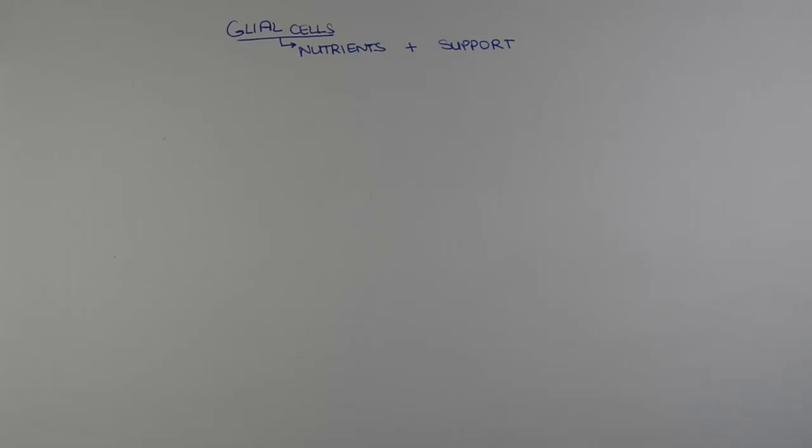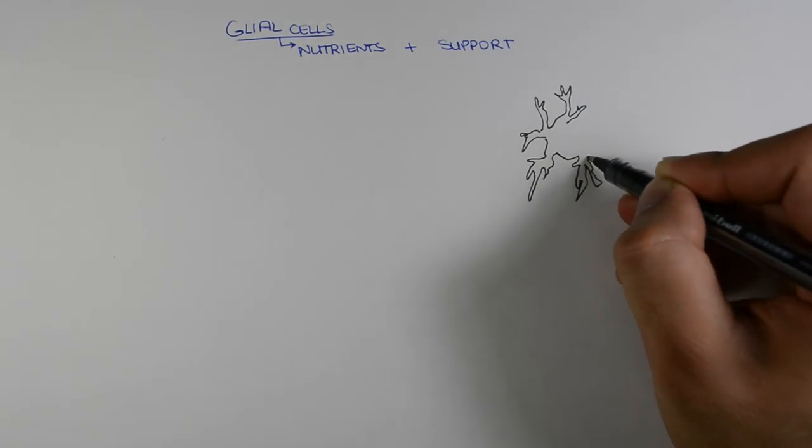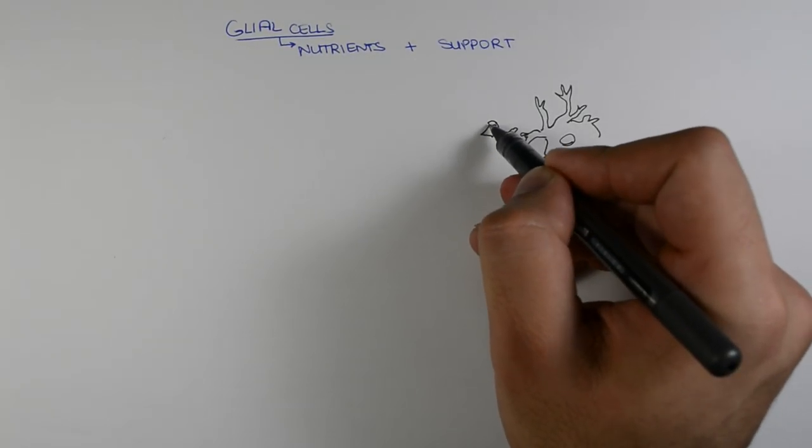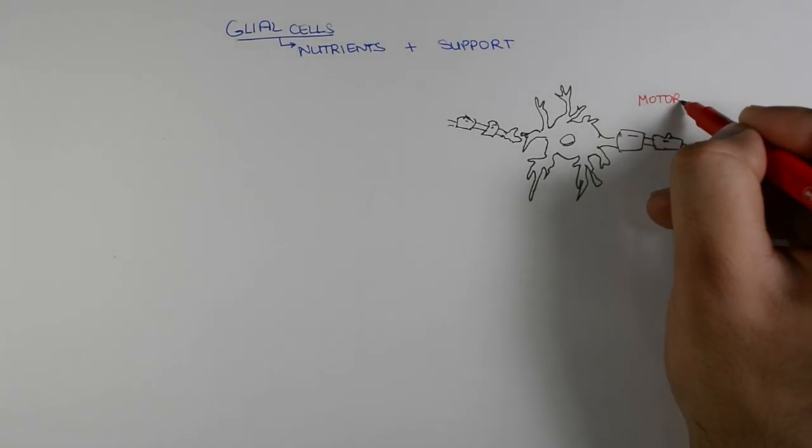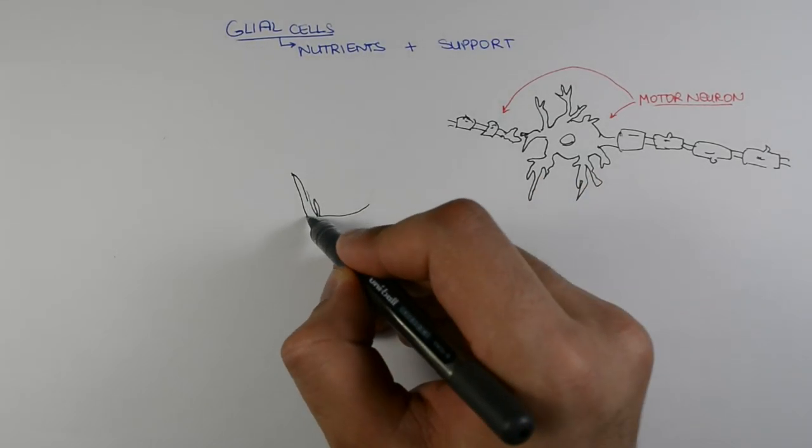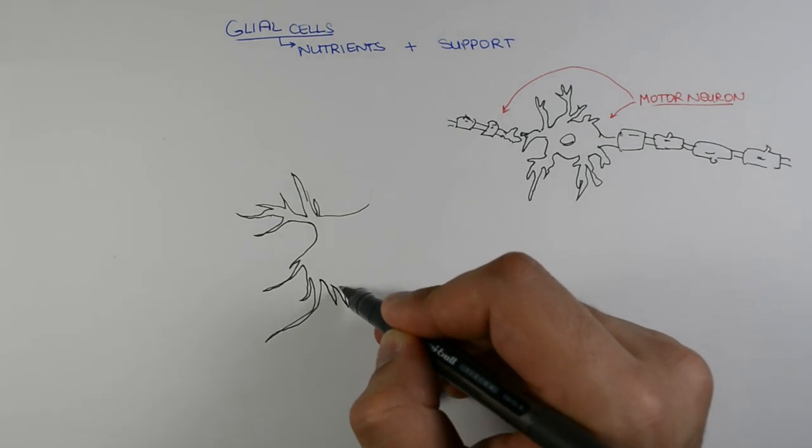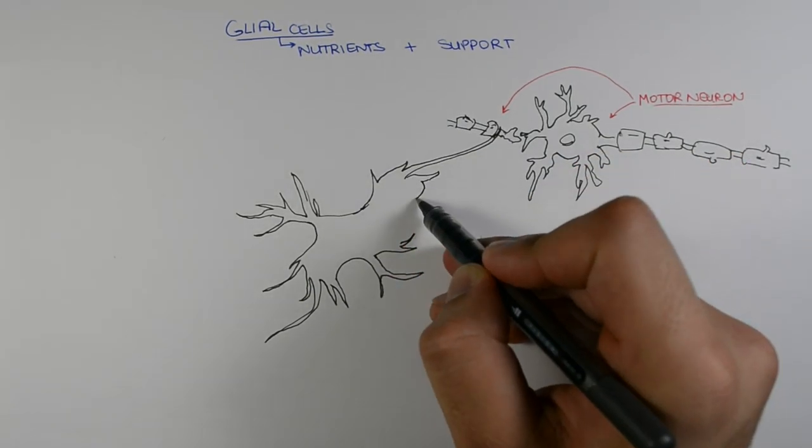Motor neurons are very active within the body and require a lot of energy and support from neighboring cells. Other cells called glia provide the support and nourishment required by motor neurons to survive. These supporting cells have also been shown to play a key role in the pathogenesis of ALS.